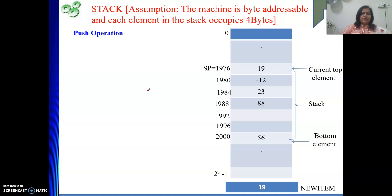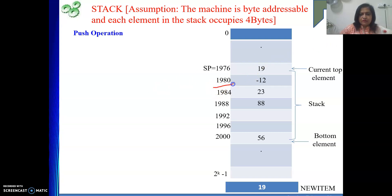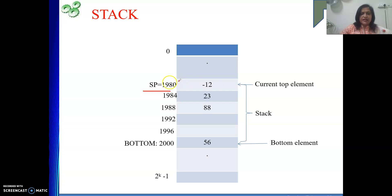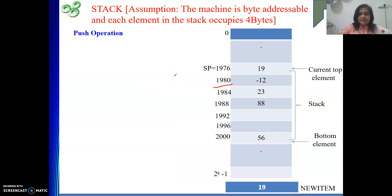Next we will see the push operation. Before doing the push operation, understand that we have taken the assumption that one element in the stack will occupy four bytes and the machine is byte addressable. So one element will take four locations. When we do the push operation, suppose our stack was initially at SP = 1980. We need to insert one element. The new element will not be inserted at 1980; rather, it will be inserted at the next lower address — four bytes apart, because each element takes four bytes. So initially your stack will be in this configuration: SP is at 1980, having top element as minus 12. Now we want to insert. Before inserting, SP will be decremented to the next location, that is 1976. And then the element will be moved to the top of the stack. This is how the push operation takes place.